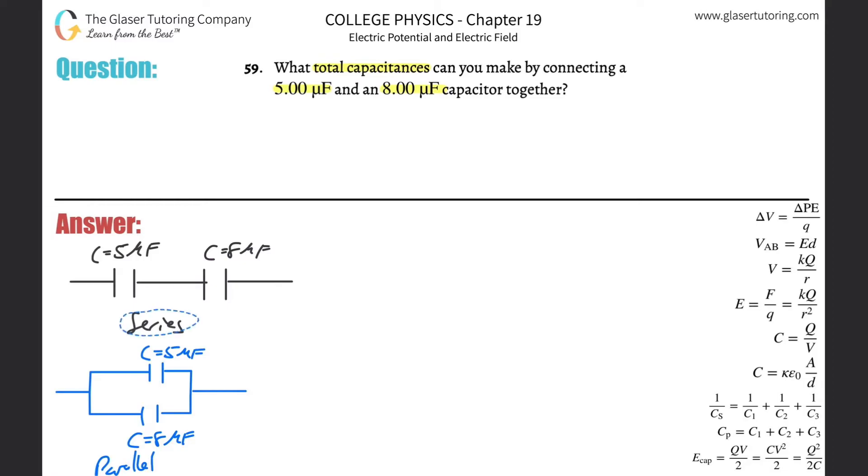Alright, the way to tell the difference—you kind of have to visually see this—but capacitors in series, and this will be the same for resistors, you can think about charge flowing through. Anytime, in order to get to this capacitor, if the charge had to flow through the first capacitor, then that's a series arrangement.